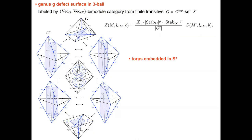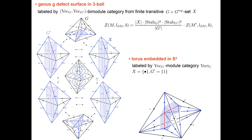For a torus embedded in S³, labeled with the trivial G-set on the inside (trivial group inside, trivial G-set labeling), one can compute the state sum explicitly using triangular pipes connected by joints. The result: the state sum gives the number of group homomorphisms from the fundamental group of the knot complement into G, up to conjugation, times the cardinality of the set. So the state sum detects the knot type via the knot group, showing the embedding matters.